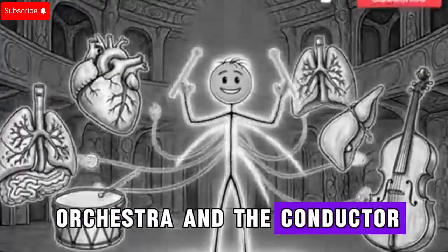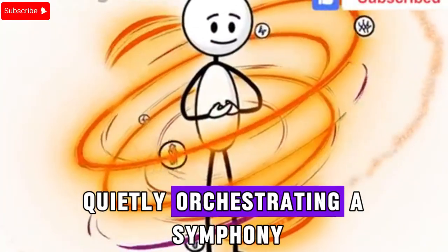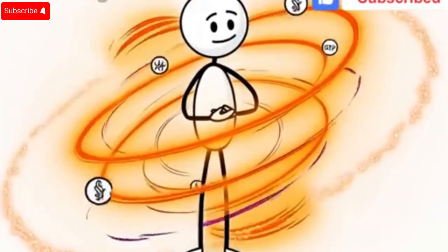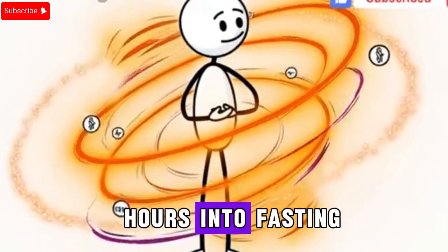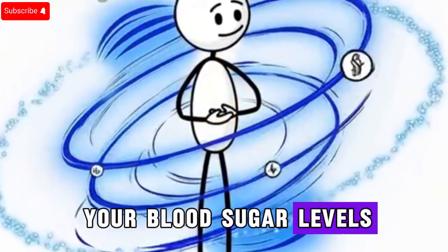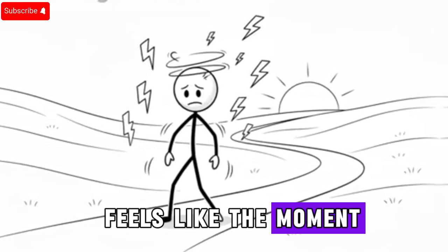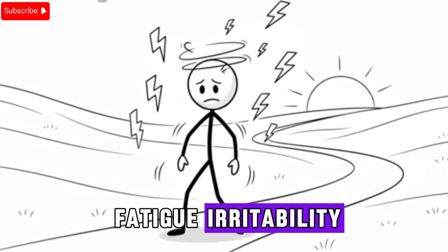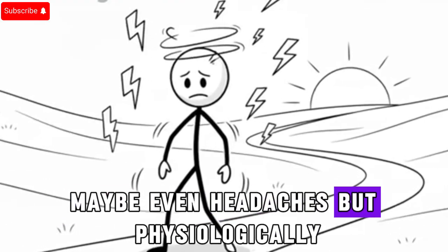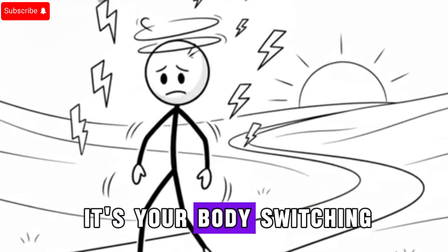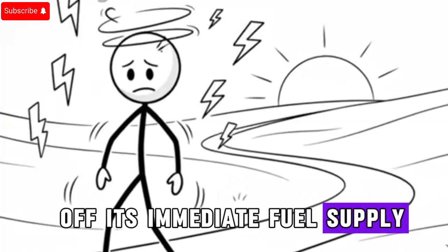And the conductor? Your metabolism, quietly orchestrating a symphony of changes. Around six to eight hours into fasting, your blood sugar levels begin to decline. For most people, this feels like the moment of crash: fatigue, irritability, maybe even headaches. But physiologically, it's your body switching off its immediate fuel supply.